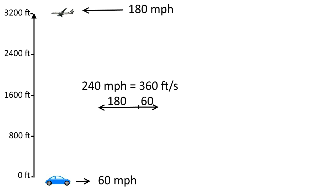In the mile system, the car is 60 miles per hour, and the plane 180 miles per hour, so the differential speed, seen from the car, is 240 miles per hour, which is 360 feet in one second.